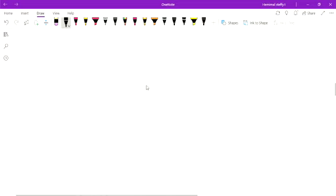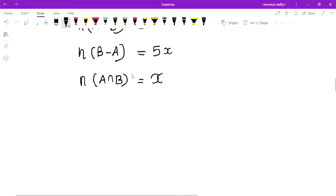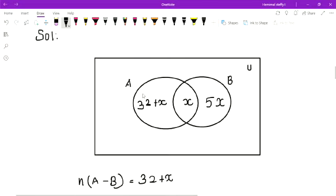Next, given n(A) equal to n(B). N of A is equal to n of B. N of A means which place is n of A? N of A is this whole circle. So 32 plus x plus x. This is also, all elements are included in A.